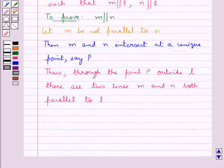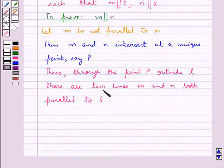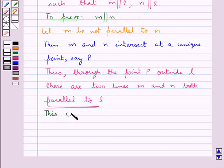since here we have that M and N are two distinct intersecting lines and both are parallel to the line L, this contradicts Euclid's fifth postulate.